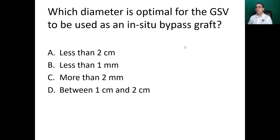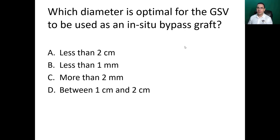Which diameter is optimal for the greater saphenous vein (GSV) to be used as an in-situ bypass graft? The GSV should be patent to be used as a bypass graft. The answer is more than two millimeters.